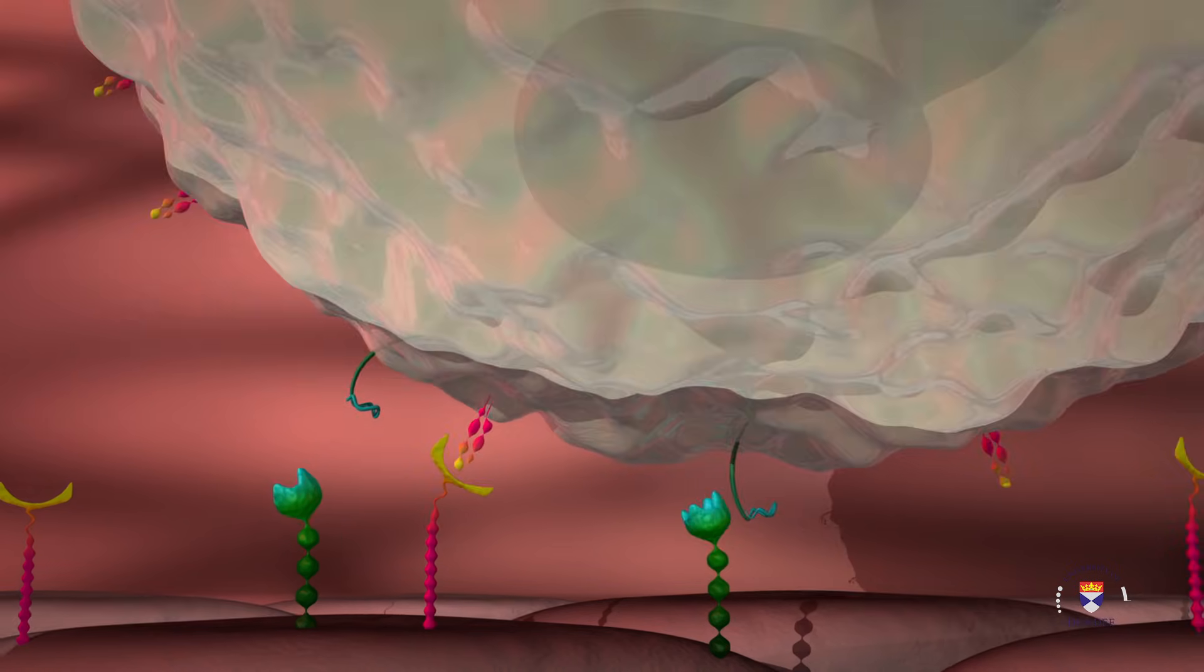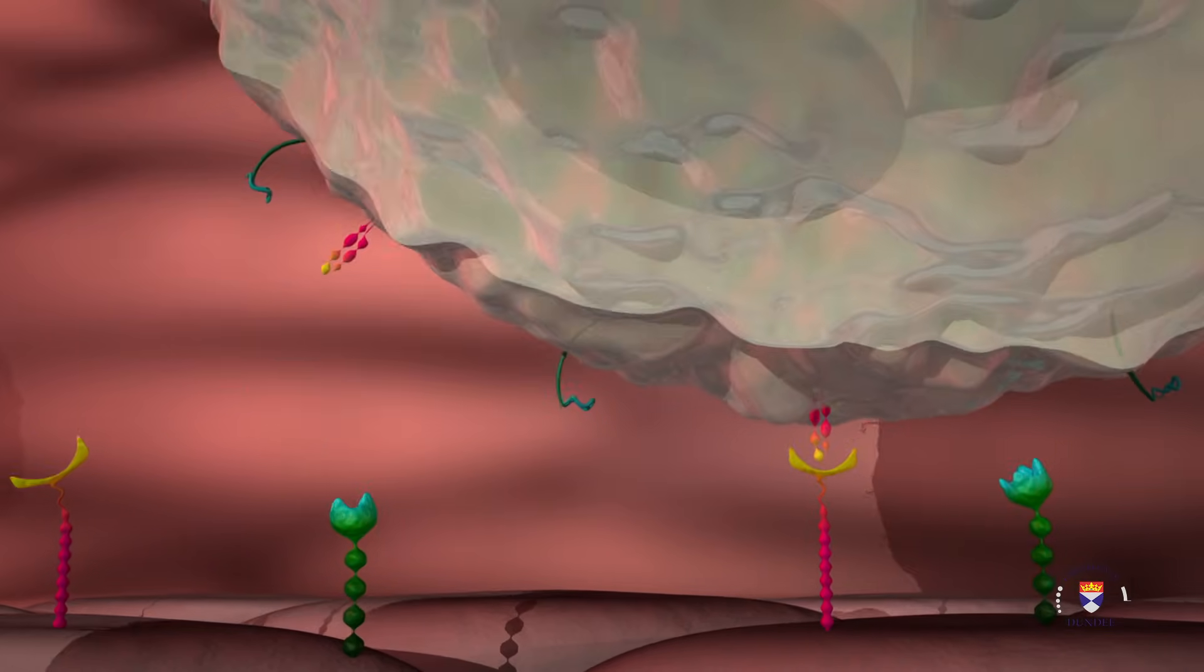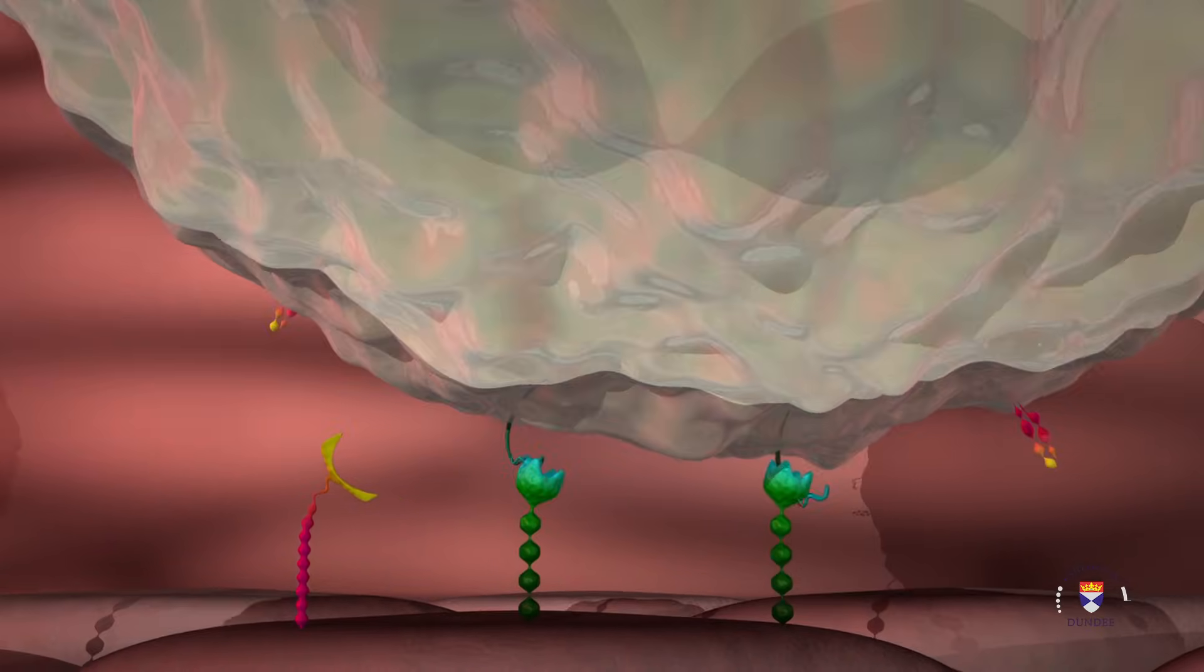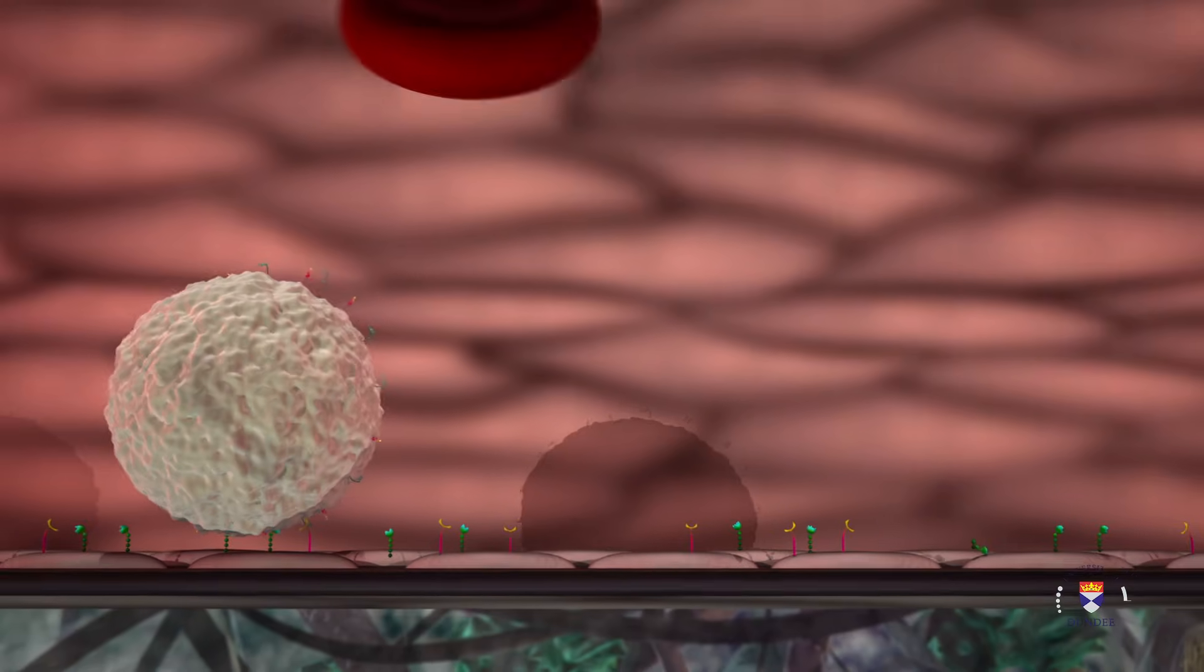These allow the leukocytes to bind to the walls of the vessel. This binding is weak and the connections between the leukocytes and vessel walls frequently break and reform. This results in leukocytes slowly rolling along the vessel walls.